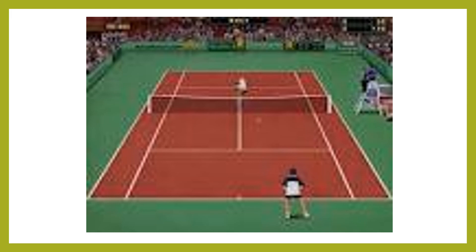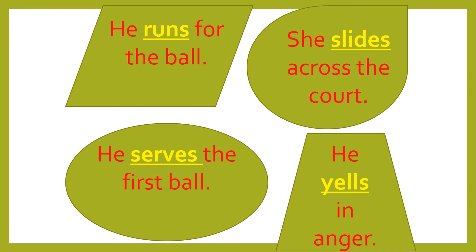Tennis court. He runs for the ball. She slides across the court — in this case it probably means she moved so quickly it was like she was sliding. He serves the first ball — 'serve' is used in both tennis and volleyball, meaning to throw the ball in the air and hit it. We also use it in ping pong. The player yells in anger — a very similar word to scream. I see tennis players yelling all the time. Venus Williams is well known for yelling a lot on the court — some people don't like it, but she's just a very emotional player who's very invested in the game.